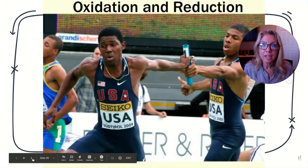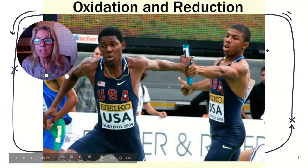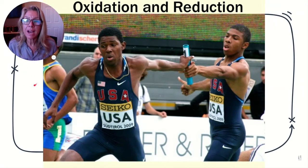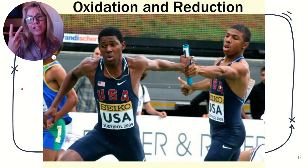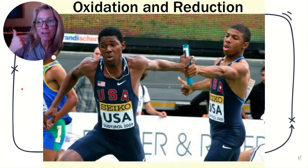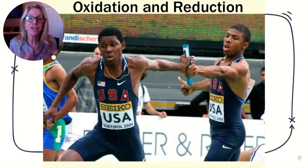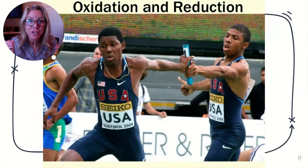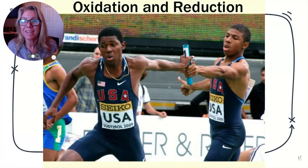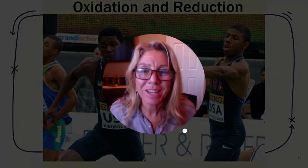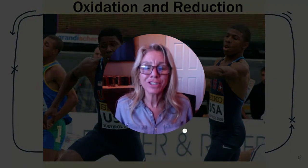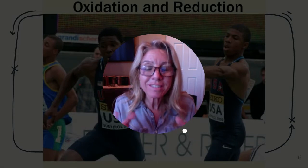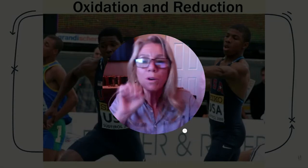Now I'm pre-teaching something you'll need for the next two chapters — chapters seven and eight — and that's oxidation and reduction. The first thing to know is that electrons equal energy. Remember your atom: protons, neutrons, and electrons. In the metabolic world, electrons equal energy.